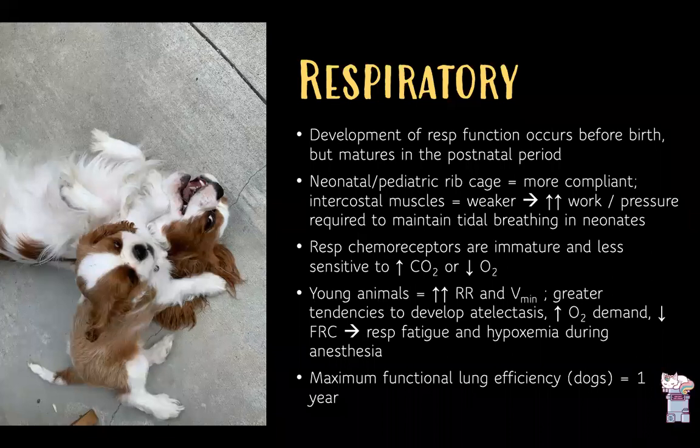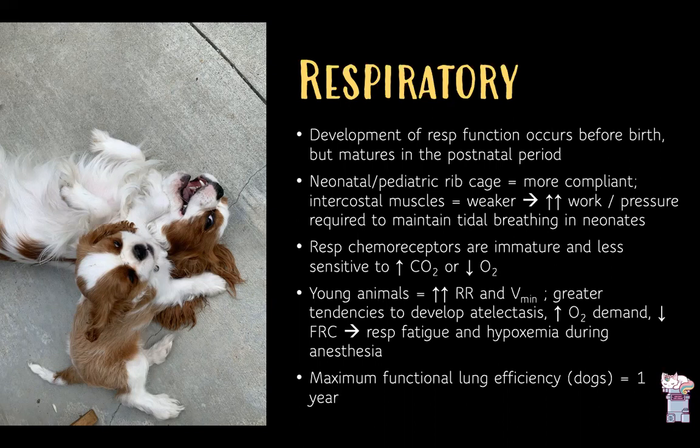Respiratory function development begins before birth but matures in the post-natal period. The neonatal and pediatric ribcage is more compliant, intercostal muscles are weaker, and there is increased work of breathing — neonates are likely to get exhausted during anesthesia. Respiratory chemoreceptors are immature and less sensitive to changes in CO2 or oxygen partial pressure. Young animals have a higher respiratory rate, increased minute ventilation, greater tendency toward atelectasis, greater oxygen demand, and decreased functional residual capacity. Maximum functional lung efficiency in dogs doesn't occur until one year of age.